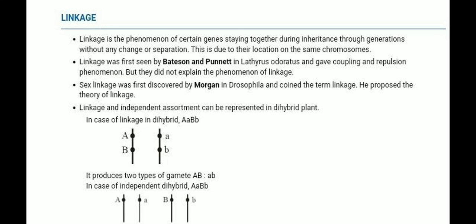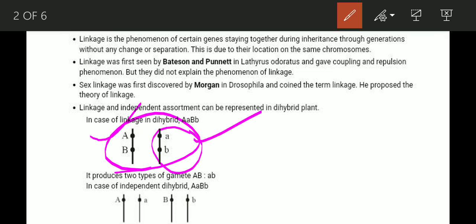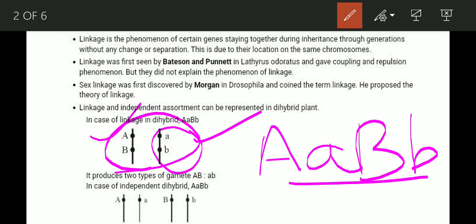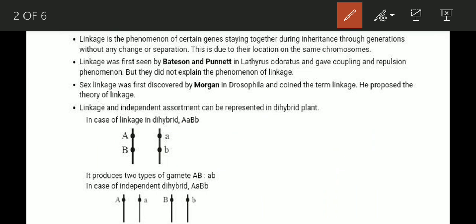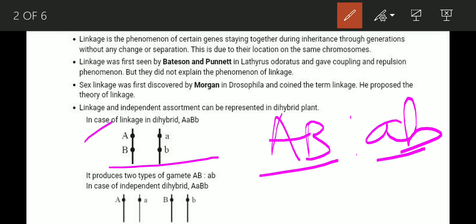In dihybrid linkage, you can see the sample data. In the case of linkage of a dihybrid where A and B are small, it produces two types of gametes. You can see the two types of gametes formed.